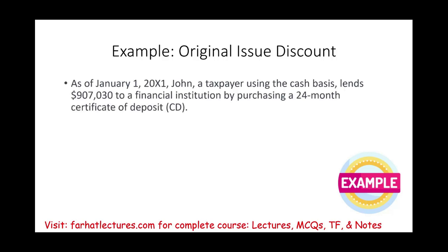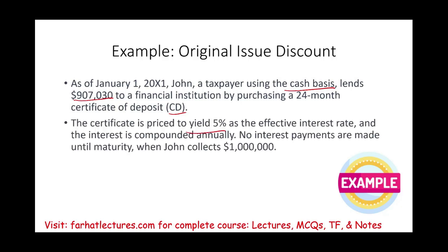Let's assume on January 1st, Year 1, John, a taxpayer using cash basis, lends $907,030 to a financial institution by purchasing a CD. The certificate is priced to yield 5% as the effective interest rate. John is going to earn 5% every year for two years — 24 months. The interest is computed annually, and no interest payments are made until maturity, when John collects a million dollars. So John walks into the bank today, lends the bank $907,030, and two years later, John can walk in and get a million dollars.